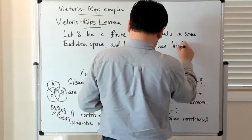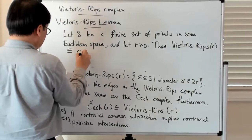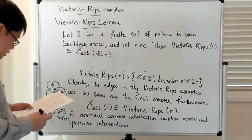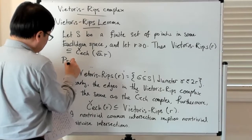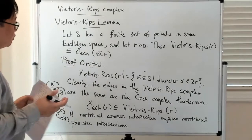And the claim is that the Vietoris-Rips of R is contained in the Čech complex of radius square root 2 times R. So this is a constant multiple, obviously, of the R, but it's independent of the radius. And then the proof I'm not going to sort of discuss, but you can look at the textbook if you're interested in this.